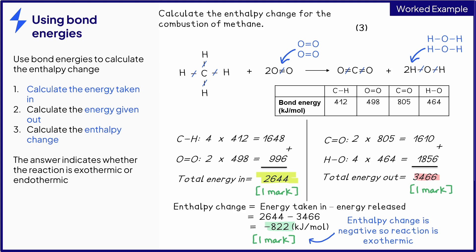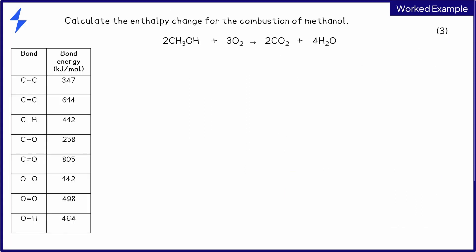It's really important that you show all your working out for these calculations. Most students lose marks not because the calculation is too difficult, but because they miscount the number of bonds that are being broken or formed. More complicated examples will require you to identify multiple types of bonds that can easily be missed. Follow the same method as in the previous example, and remember to draw your displayed formula if you are not already given it.